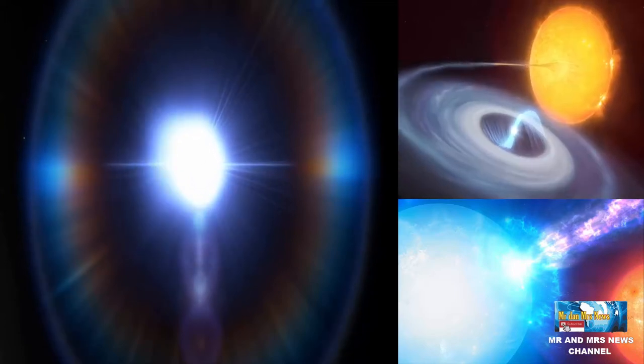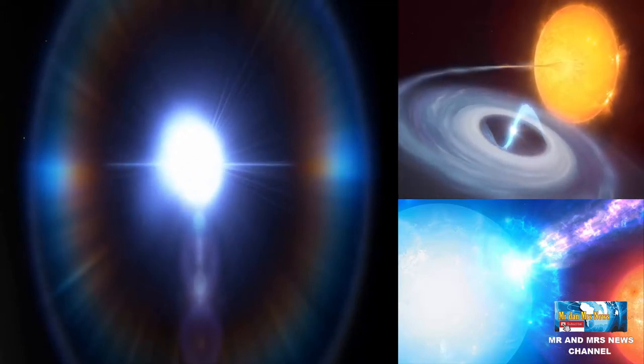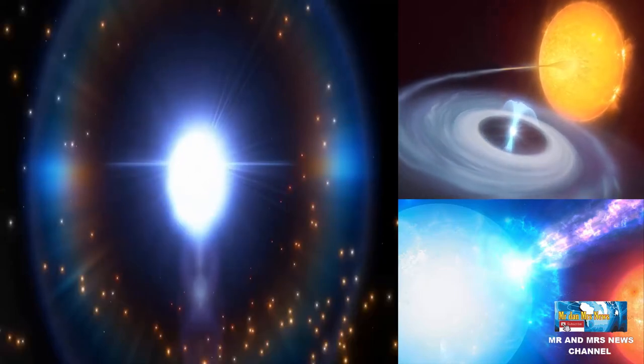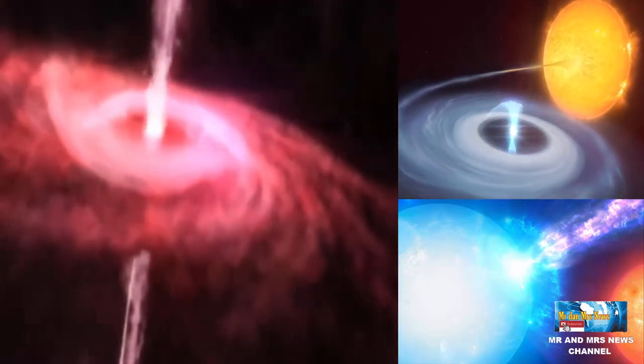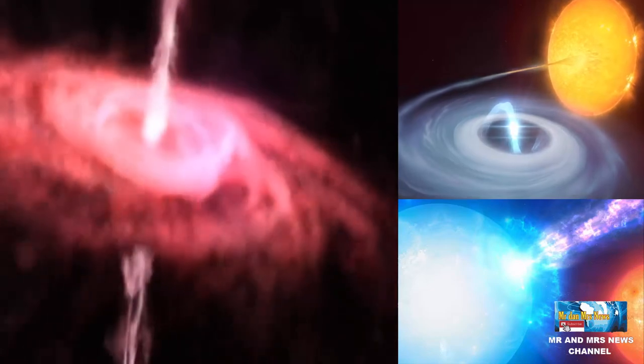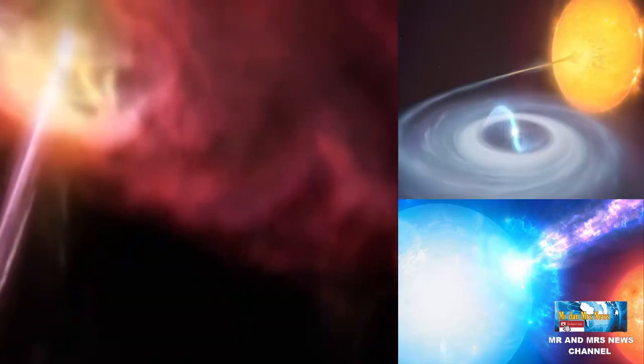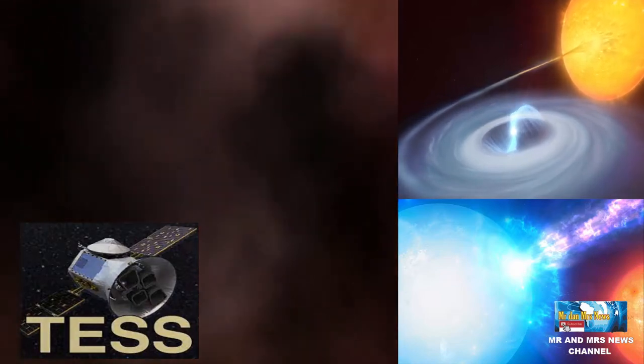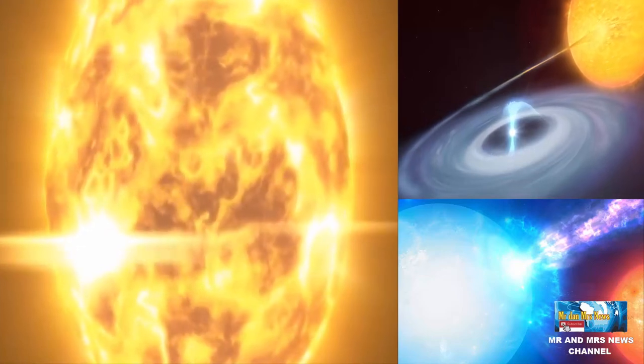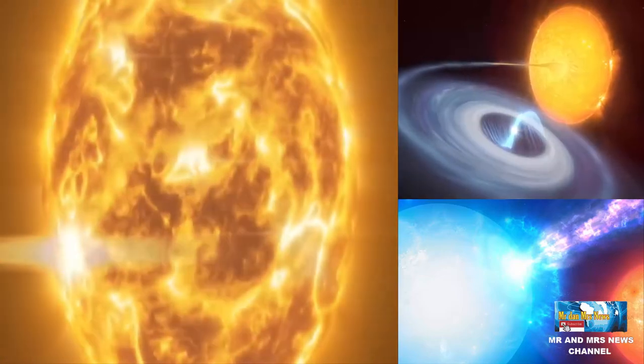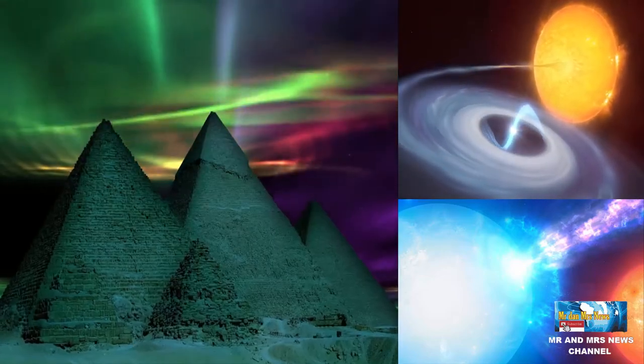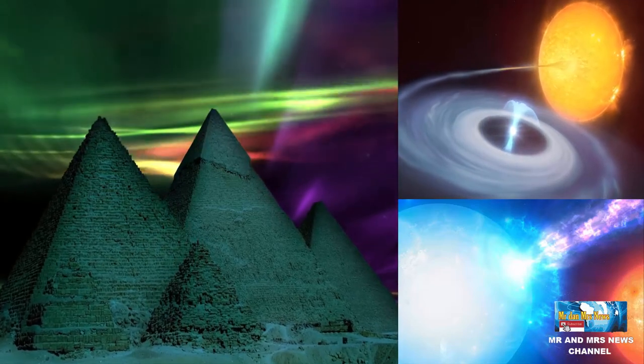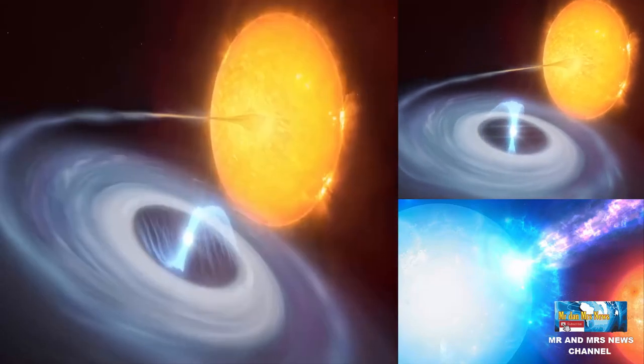Para peneliti pertama kali mengidentifikasi katai putih yang memancarkan Mikronova dalam data dari Teleskop Pemburu Planet Ekstra Surya atau Exoplanet. Instrumen Luar Angkasa Satelit Survei Transits Exoplanet NASA atau TESS dioptimalkan untuk menemukan variasi kecerahan yang sangat kecil pada bintang dengan eksoplanet yang mengorbit.